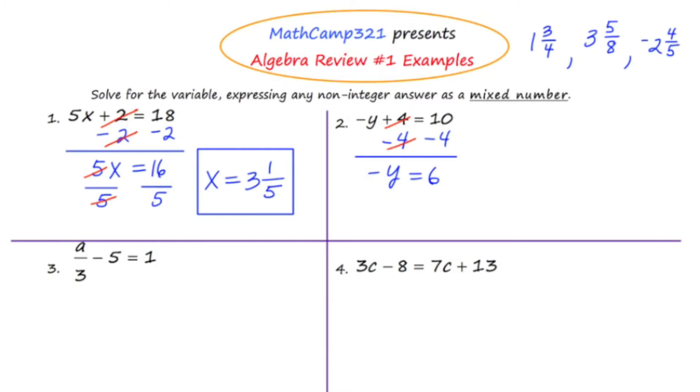Many students feel that this problem is done, but our objective is not to solve for negative y, it's to solve for y. We have to get rid of the negative. Think of that as like negative 1. What I need to do is divide both sides by negative 1. The negative 1's on the left will cancel, so we're left with an answer of y equals negative 6.